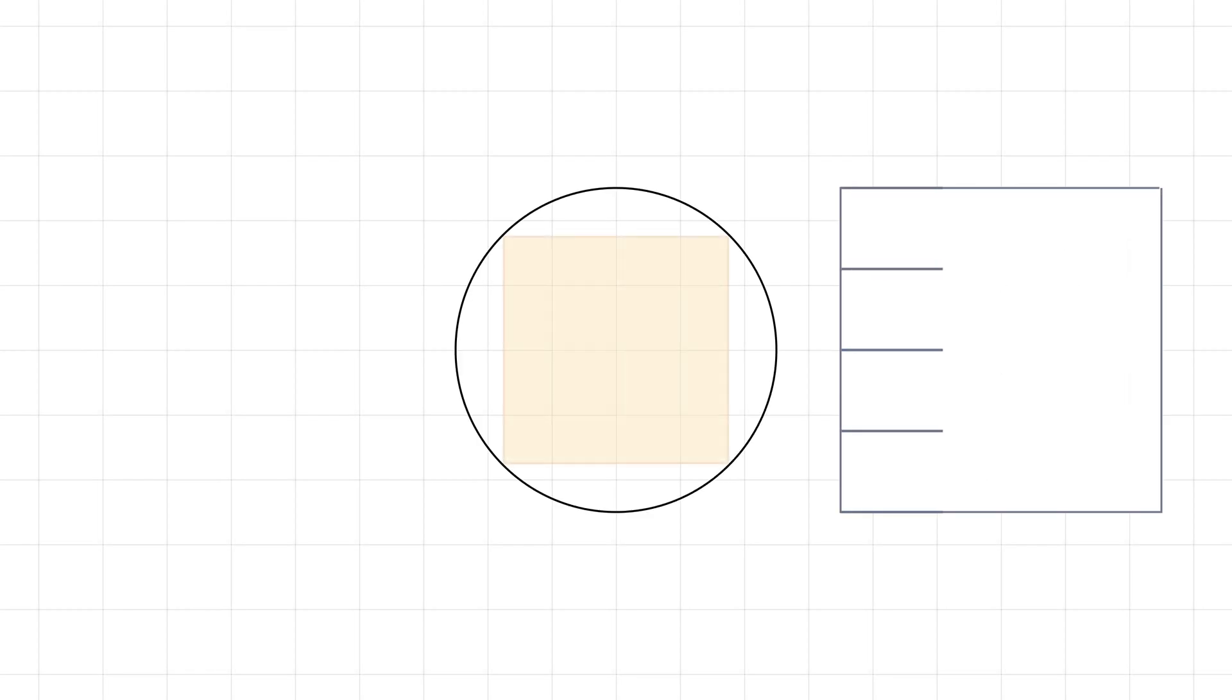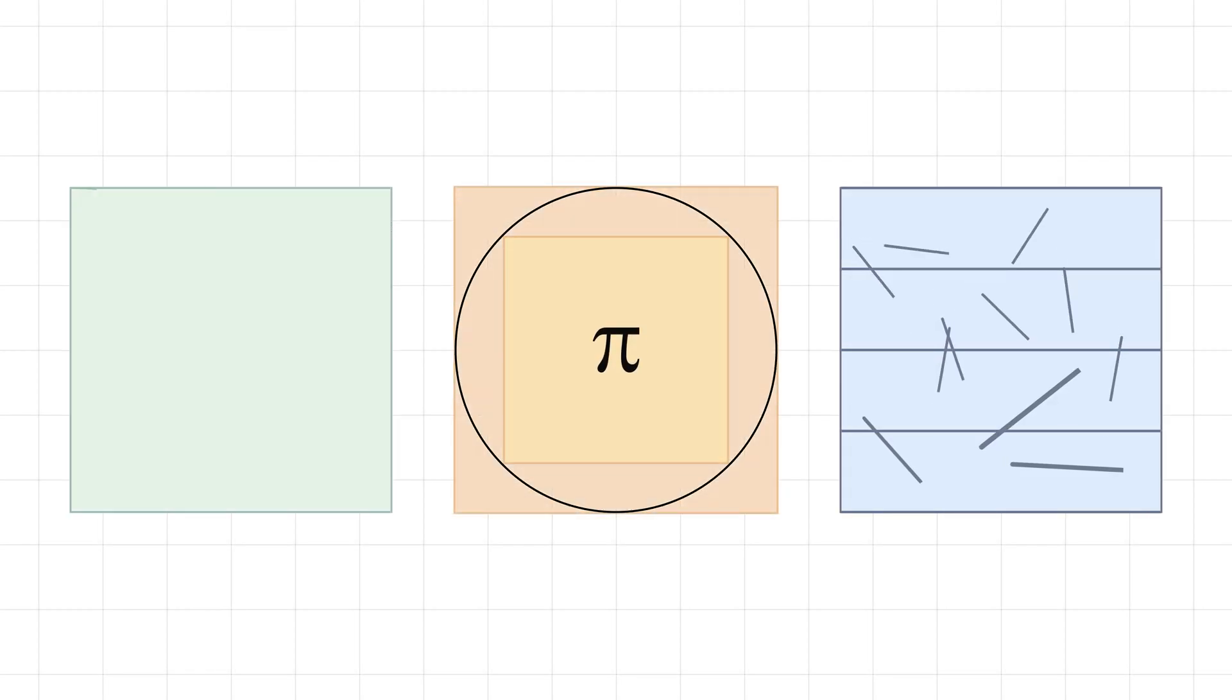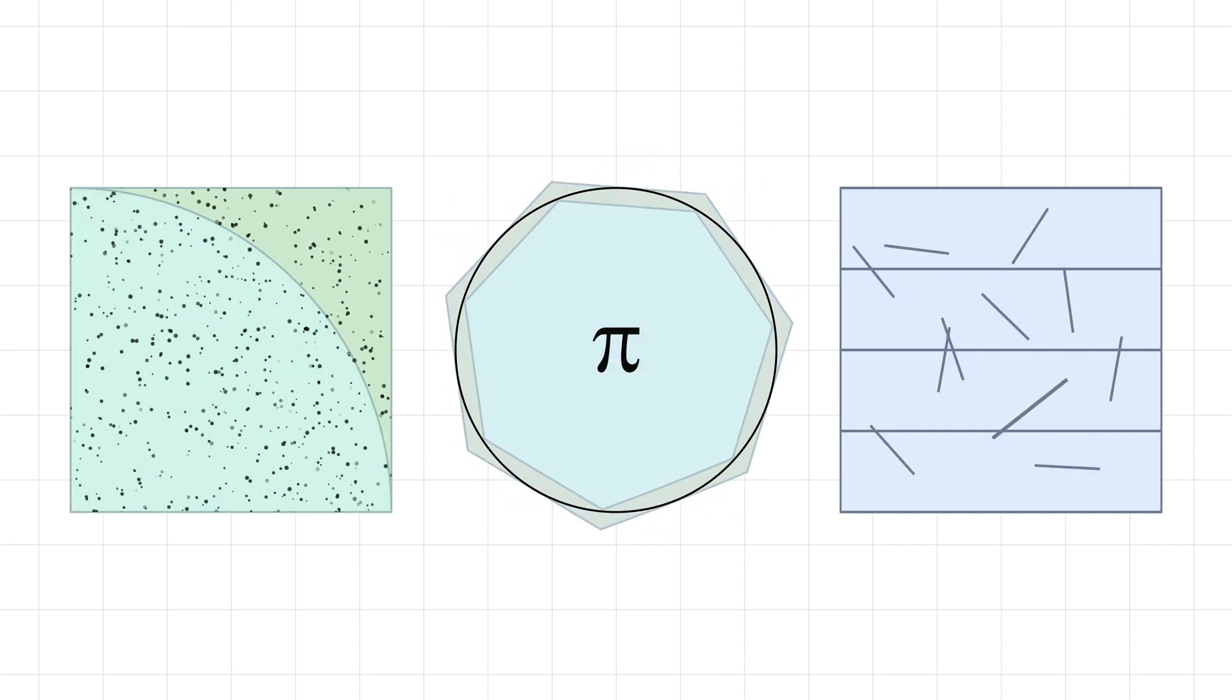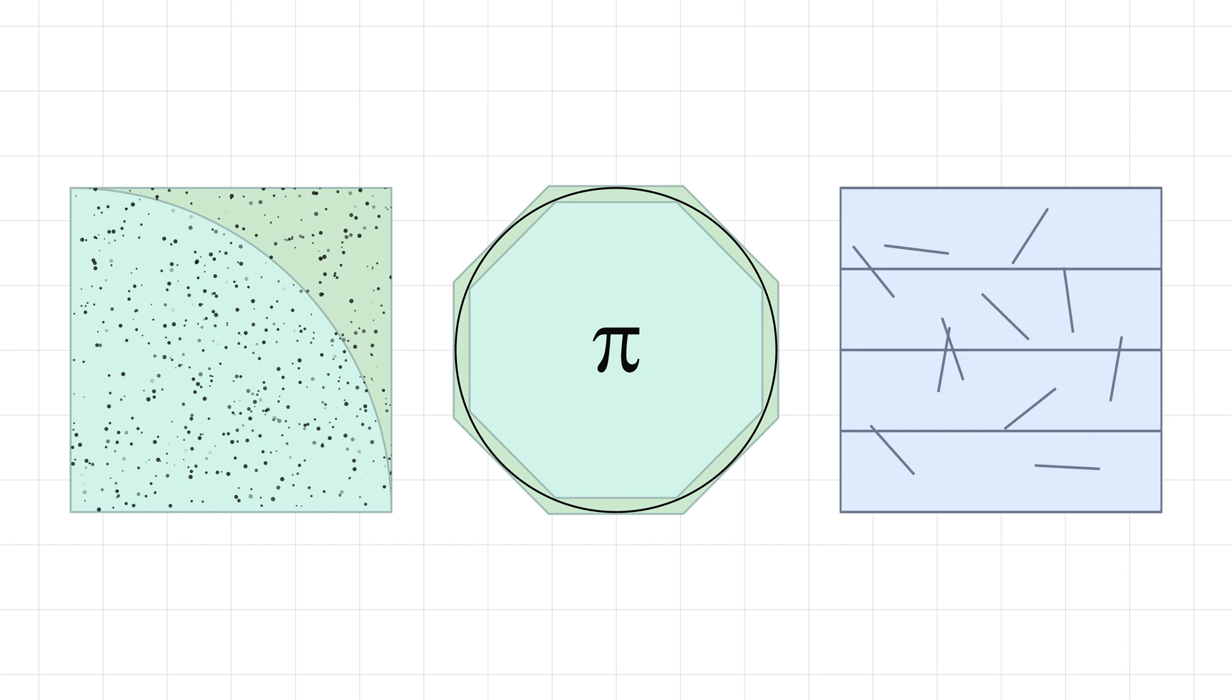Today, we are exploring 10 fascinating ways to find pi, from ancient geometry to modern algorithms. Each method highlights a unique approach to understand this incredible constant. Let's dive in.